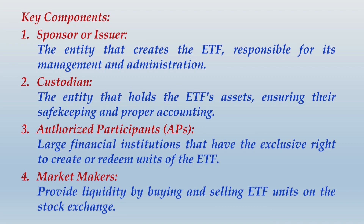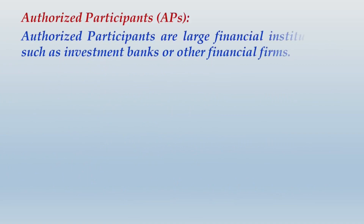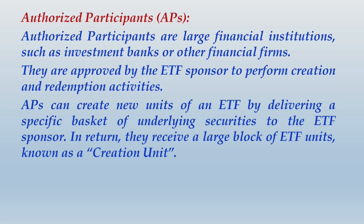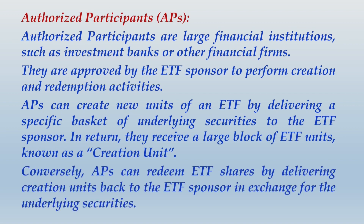Authorized participants are large financial institutions such as investment banks approved by the ETF sponsor to perform creation and redemption activities. An AP can create new units of an ETF by delivering a specific basket of underlying securities to the ETF sponsor; in return, they receive a large block of ETF units known as a creation unit. Conversely, APs can redeem ETF units by delivering creation units back to the ETF sponsor in exchange for the underlying securities.